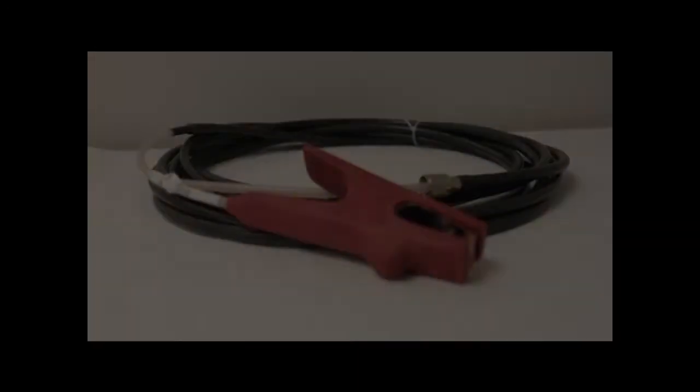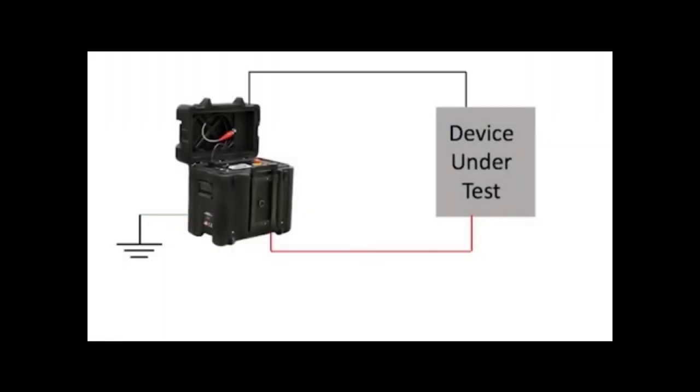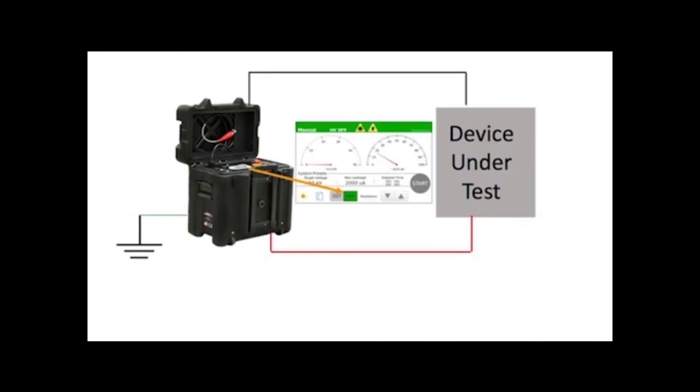Finally, connect the high voltage cable from the DC HiPOT to the DUT. Make sure UST or the ungrounded mode is selected on the DC HiPOT.